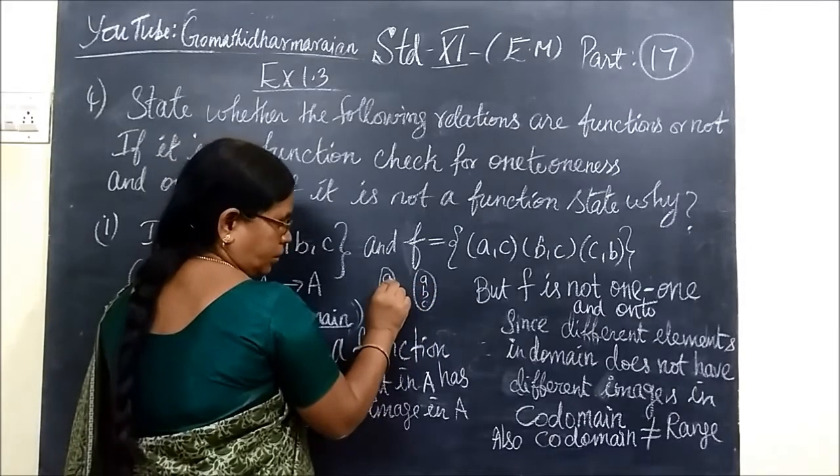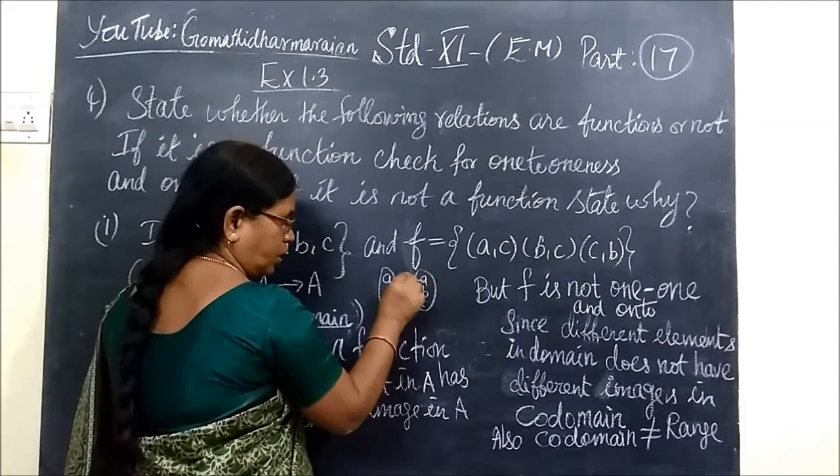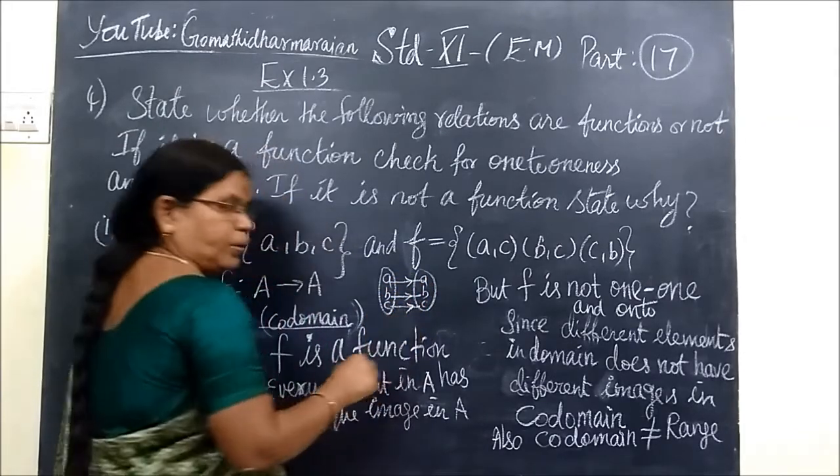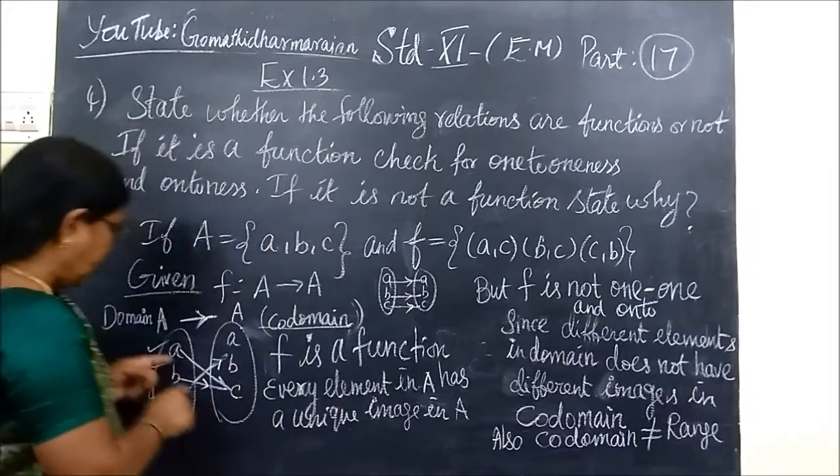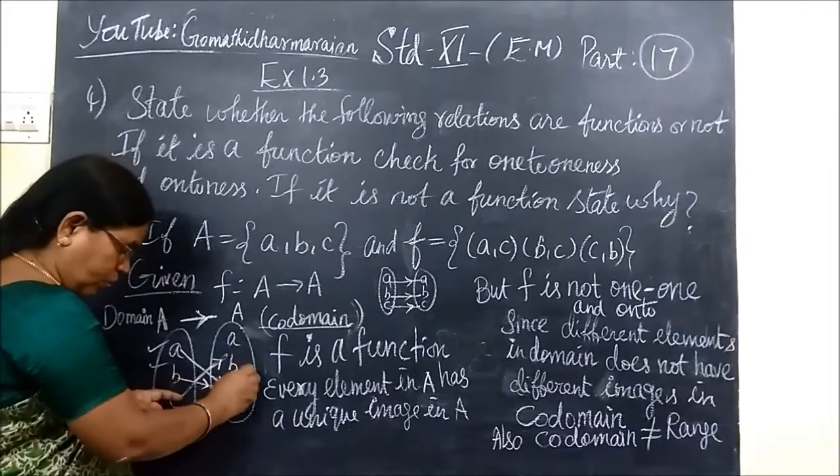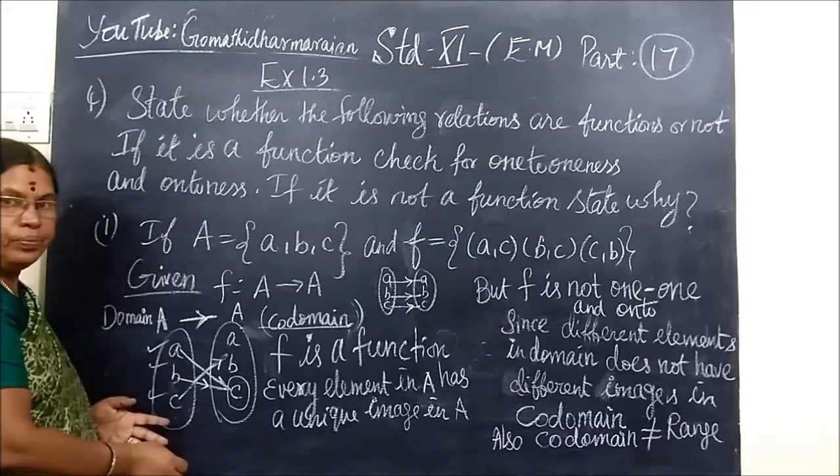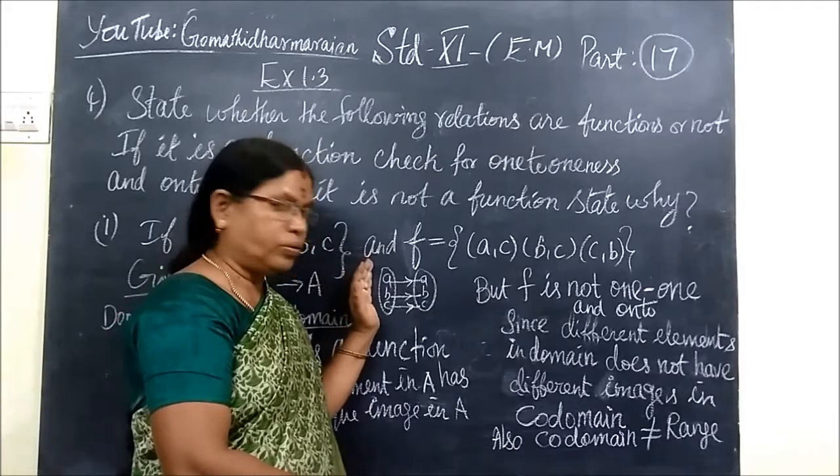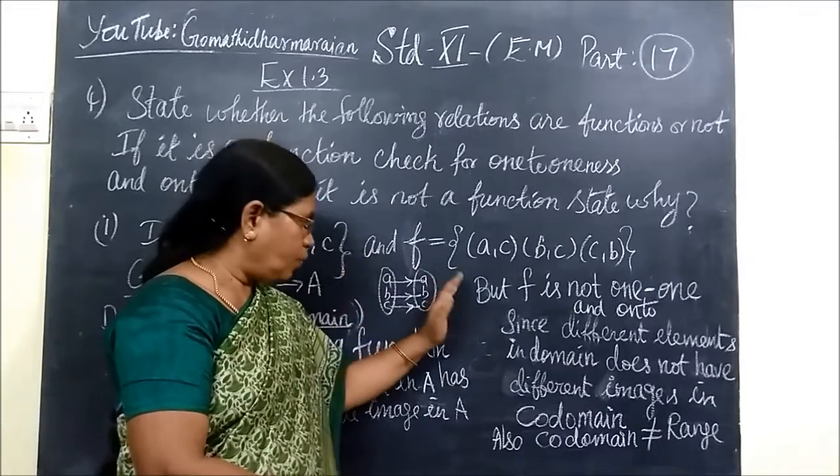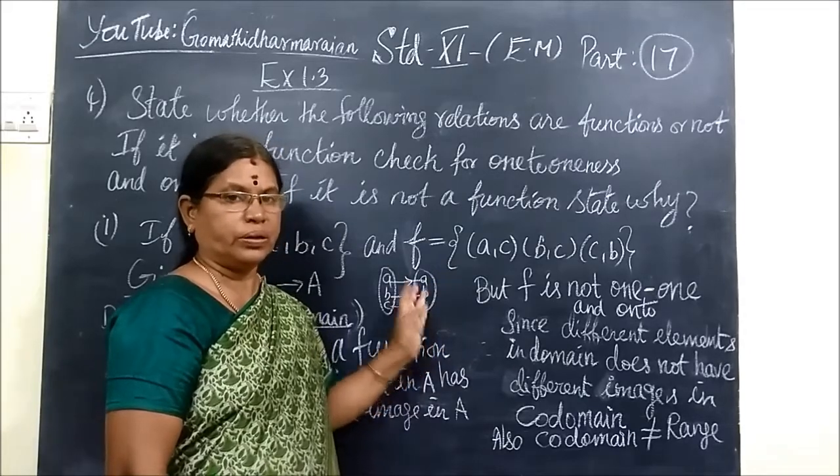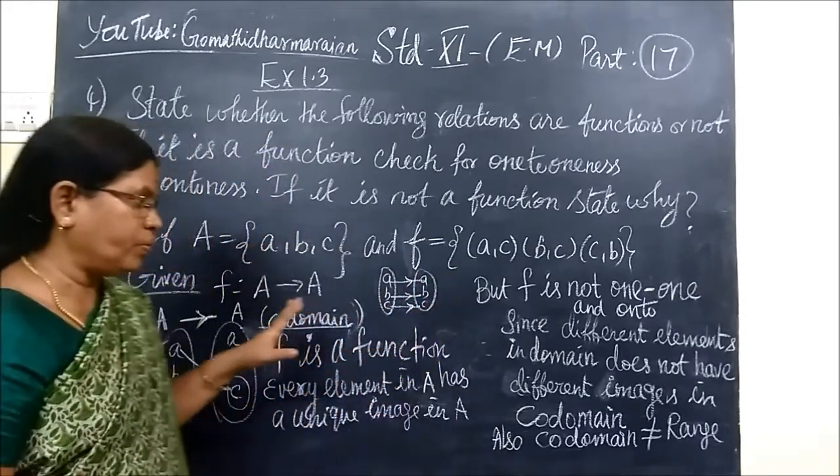Different elements in A should be associated to different elements in the codomain. So it is not one-to-one. One-to-one means different elements in domain should be associated to different elements in codomain. Otherwise, it is not a one-to-one function.